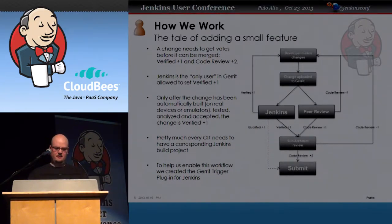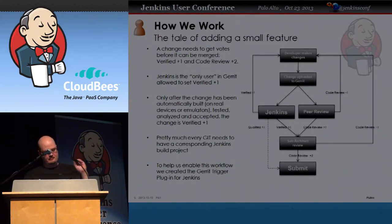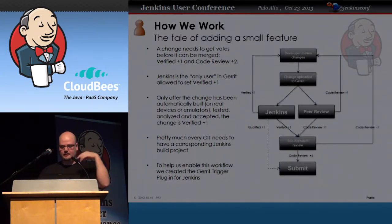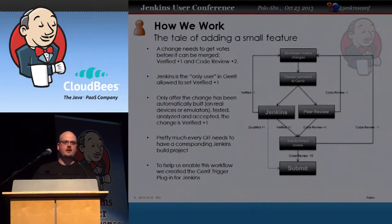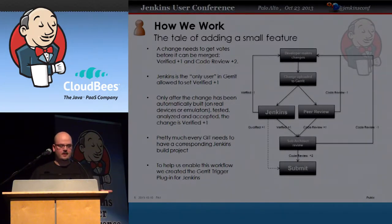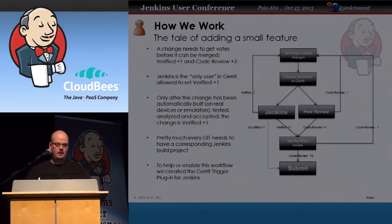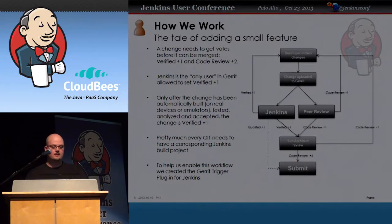A −2 basically means your life as an engineer is over — please get a job flipping burgers. So if you have some comments, you put a −1. Once it has a +1, it goes to the next step: a sub-distribution architect responsible for a larger piece of the code — like graphics or networking — looks through it and votes +2, and then it gets merged in.